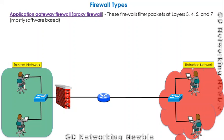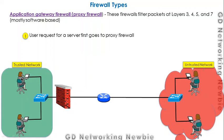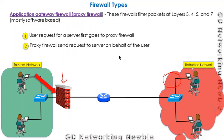The final type is the application gateway firewall, also known as the proxy firewall. These are mostly software-based firewalls and work at Layers 3, 4, 5, and 7 of the OSI model. When a user from the trusted network wants to request something from a server on the untrusted part, the request first goes to the proxy firewall, which then makes a request on behalf of the client to the server.